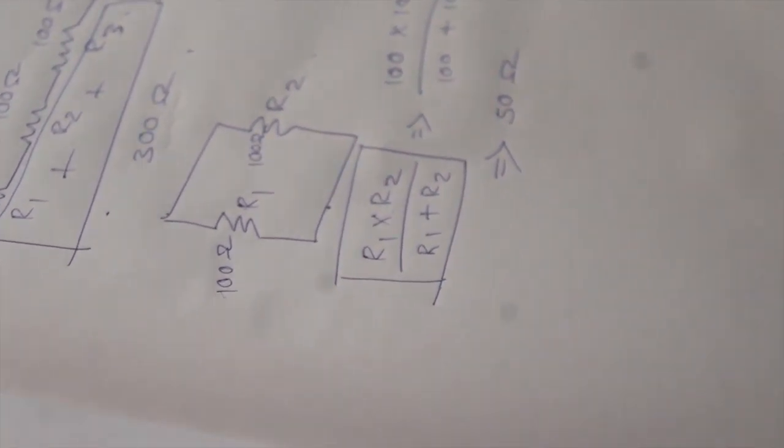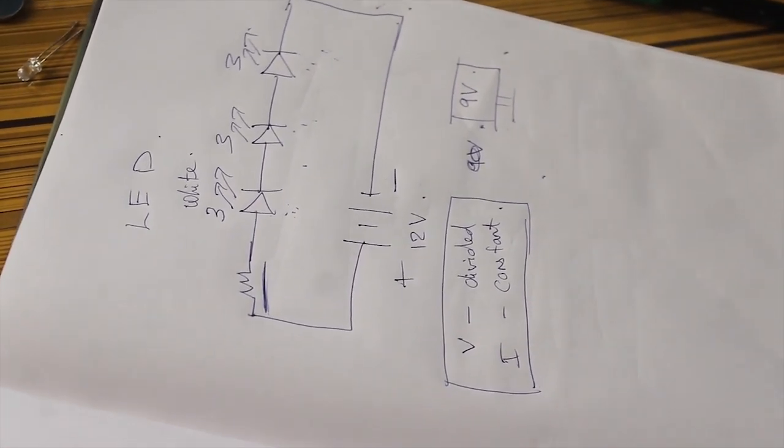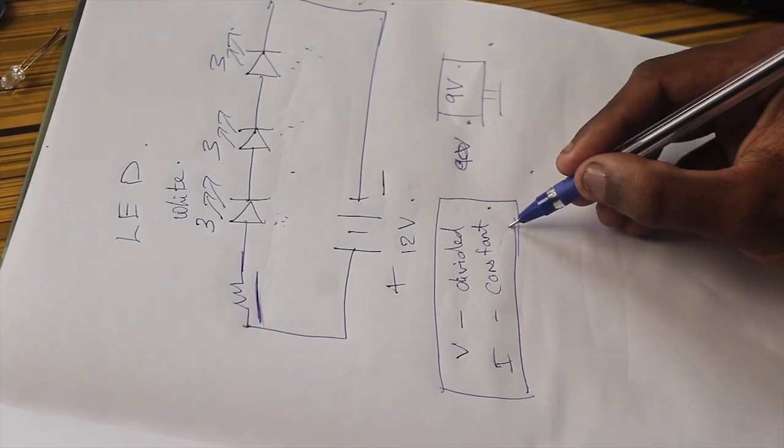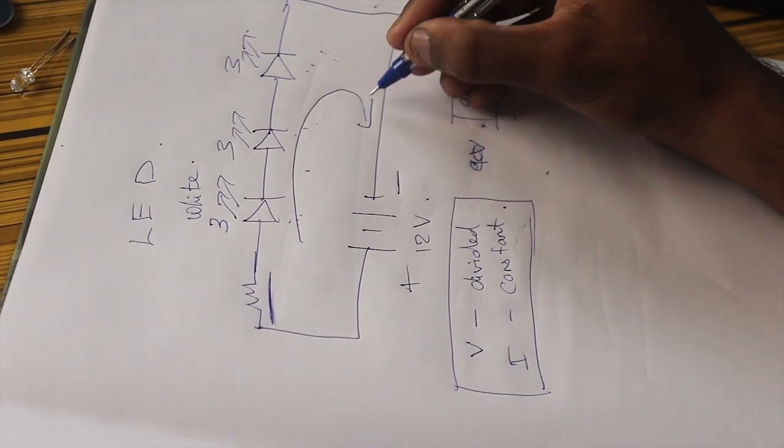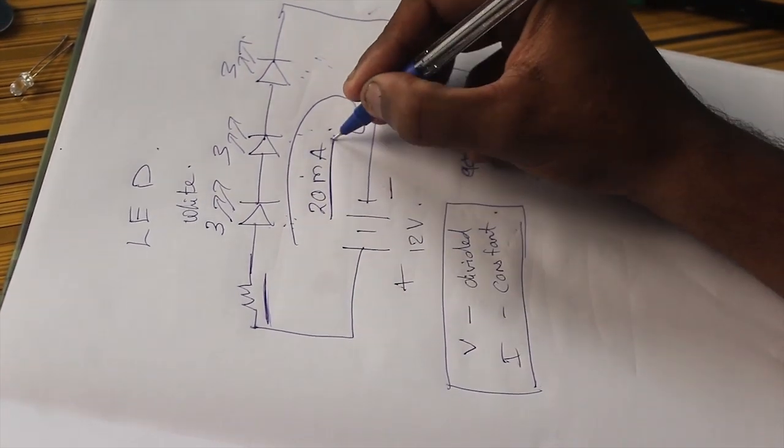Now we will see how LEDs act in series and parallel circuits. This is the series circuit of LEDs. In a series circuit, the voltage gets divided and the current remains constant throughout the circuit. In this circuit, the current remains at 20 milliamps, which is the rated current of the LED.